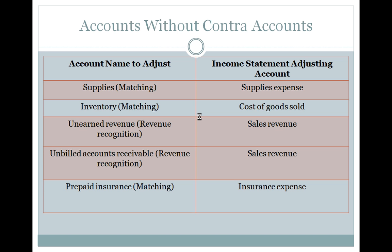I've put up on the screen some examples of accounts we need to adjust at period end. For example, supplies — this relates to the matching principle because supplies are an asset. Some assets expire during the period and need to be recorded as supplies expense. You're learning which account is being adjusted, which principle applies — matching or revenue recognition — and then the income or expense account related to truing up that balance sheet account. The offset always goes to an income statement account: revenue or an expense.